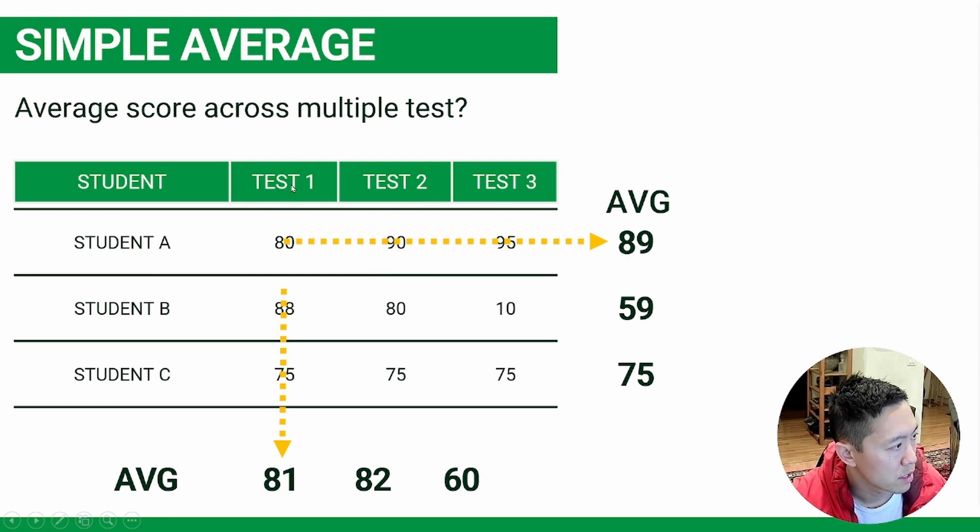Conversely, if you want to know the average of test one, you just add the test scores of all three students, divide by three, for an average of 81.